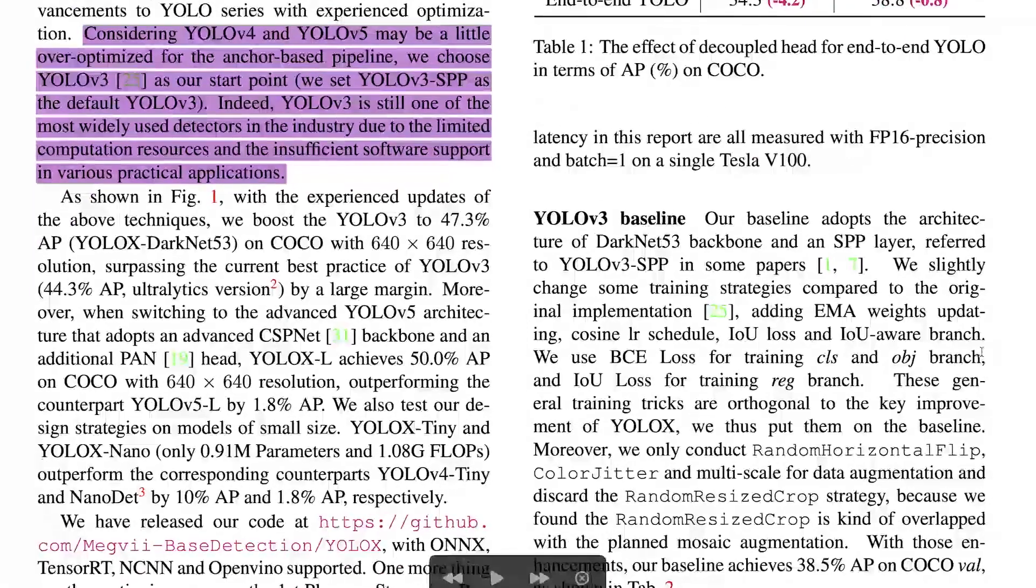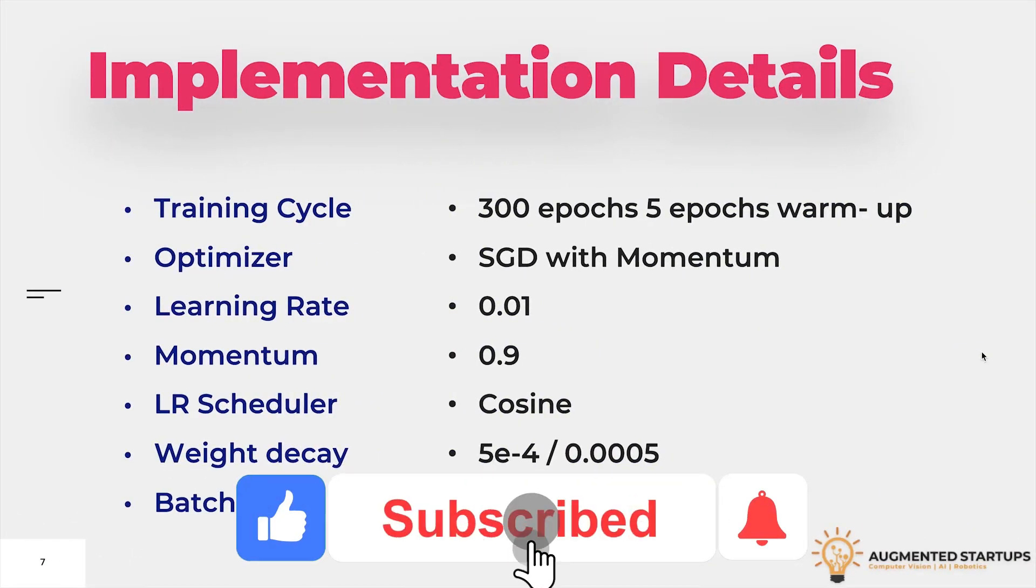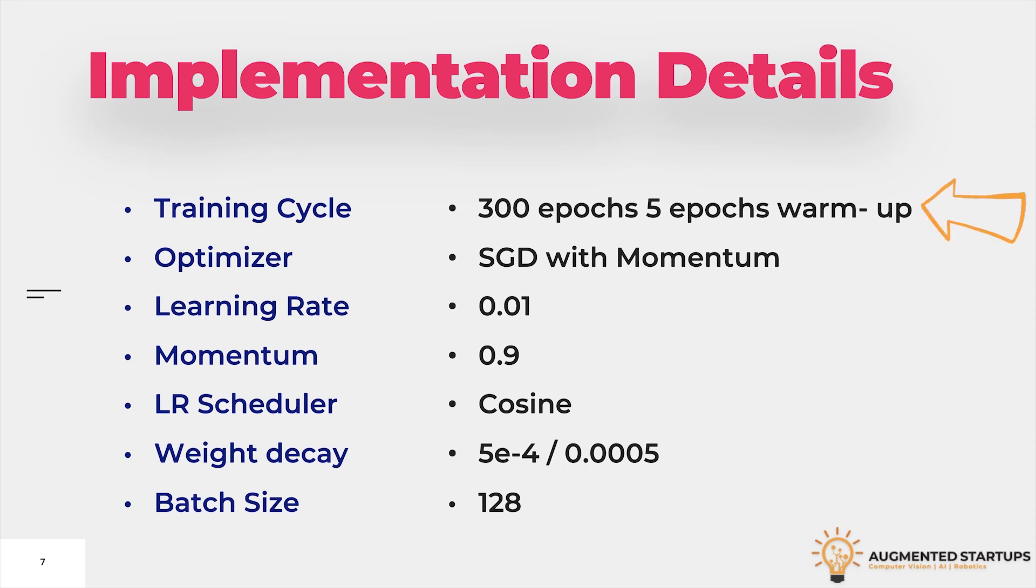Now, let's understand the implementation details. As mentioned earlier, they have used YOLO V3 SPP Darknet-53 as their baseline model. When we talk about the training implementation, the training settings are mostly consistent from baseline to the final model. The training cycle is in total 300 epochs and 5 epochs warm-up on COCO Train 2017.